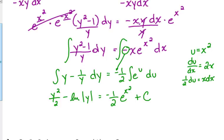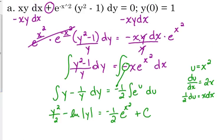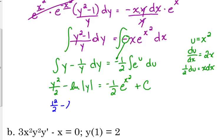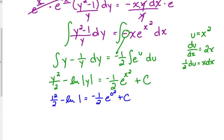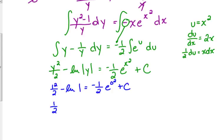I do not know of any way to completely isolate y there, so it would not be possible to find an explicit general solution — we have to leave it implicit. But they wanted a particular solution. When x is 0, y is 1, so plug in 1 for y: 1 squared over 2 minus the natural log of 1 equals negative 1 half e to the 0. This simplifies nicely — 1 half minus 0 equals negative 1 half times 1. So we've got 1 half plus 1 half, giving us c equals 1. So that's our particular solution.